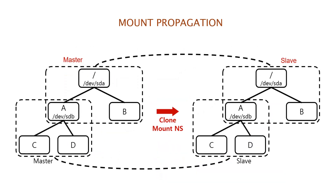When a new mount namespace is created, it gets a copy of all the mount points of the process which creates it. Typically, namespaces are created by the unshare system call. The process namespace is called the master namespace, and the namespace cloned by the process is called the slave namespace. With mount propagation, we can have control over the propagation of mount point changes occurred in the master namespace to the slave namespace, and vice versa.